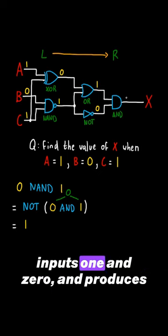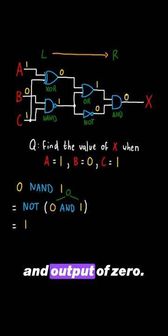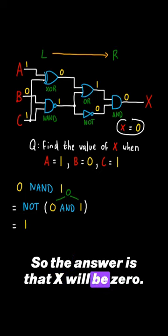Finally, the AND gate takes the inputs 1 and 0, and produces an output of 0. So the answer is that X will be 0.